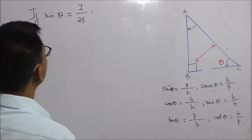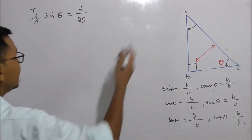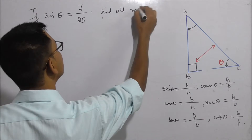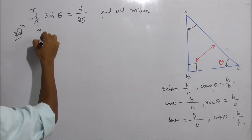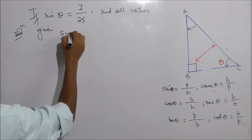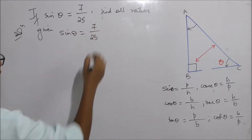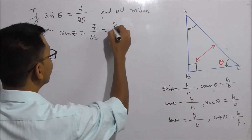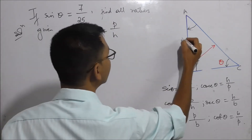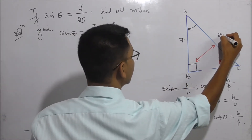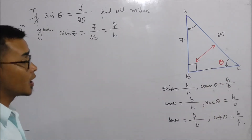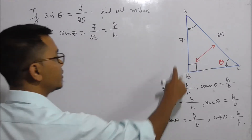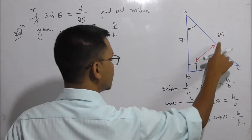If sine theta is equal to 7 by 25, find all trigonometric ratios. Solution: Given sine theta equals 7 by 25. Since sine theta equals perpendicular by hypotenuse, we have perpendicular equal to 7 and hypotenuse equal to 25.